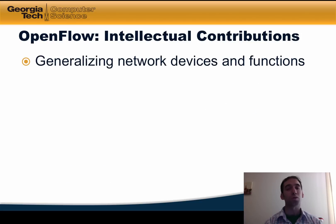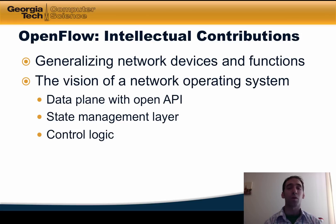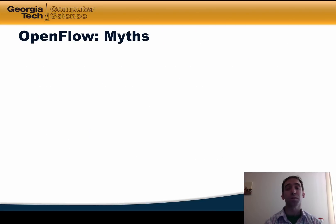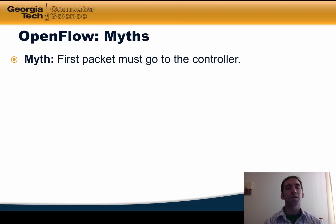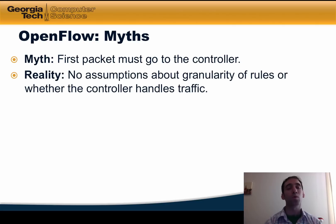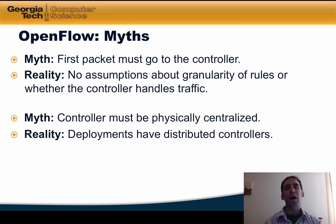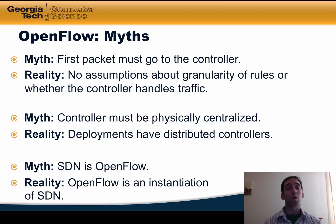OpenFlow itself offered several intellectual contributions. One was generalizing the network devices and functions that a control data plane could support. A second was a vision of a network operating system with three layers: a data plane with an open API, a layer for managing state, and a control logic layer that affected the data plane based on the state of the network. These network operating systems also developed new distributed state management techniques. There are several myths surrounding OpenFlow as well. One is that many thought the first packet of every data flow must go to the controller; in fact, OpenFlow makes no assumptions about the granularity of rules or whether the controller handles any traffic at all. The second myth is that the controller must be physically centralized; in fact, most real deployments have distributed controllers. The final myth is that SDN and OpenFlow are equivalent; in fact, OpenFlow is just one instantiation of SDN.